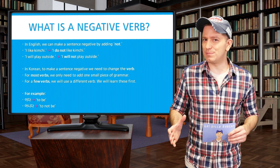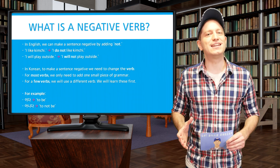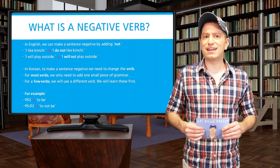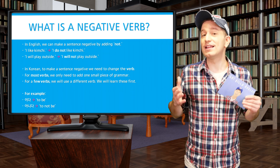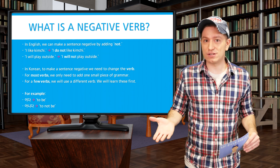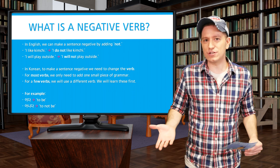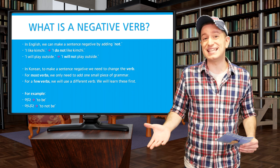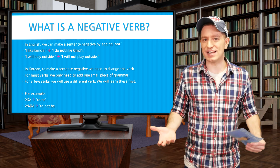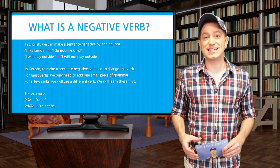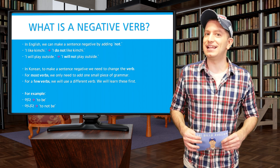But first we need to talk a bit about negative verbs. What is a negative verb? Well, in English, to make a sentence negative, all you have to do usually is attach NOT before the verb.